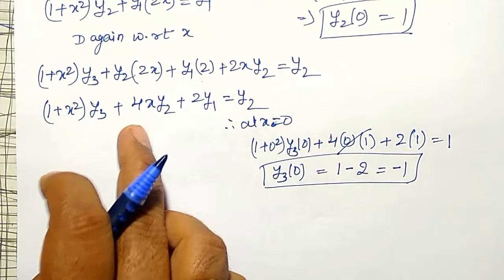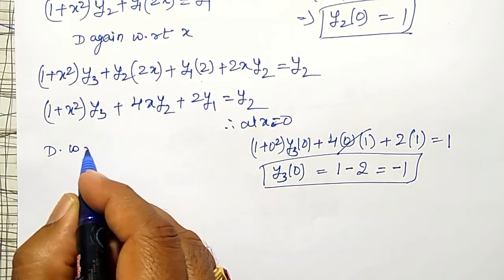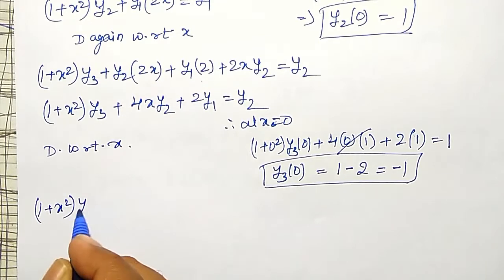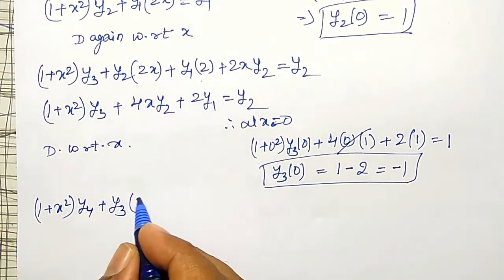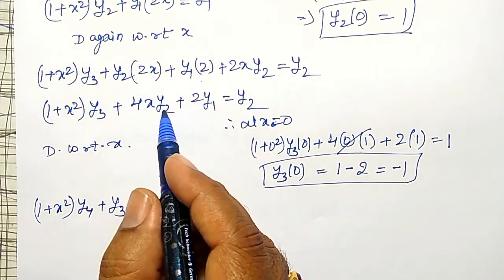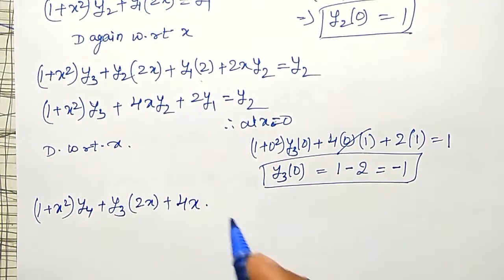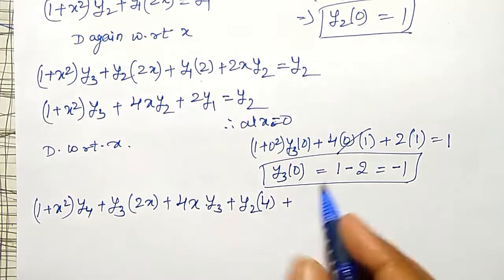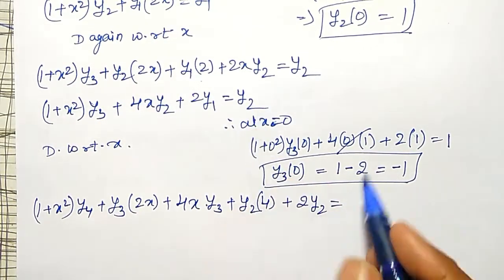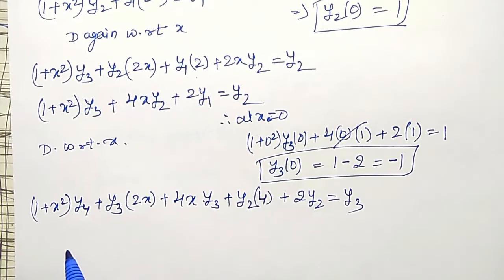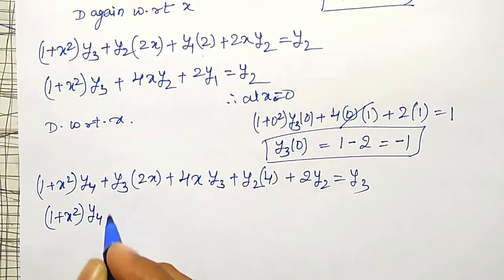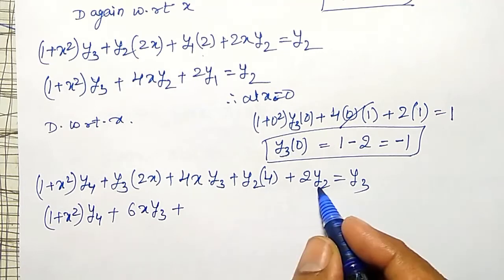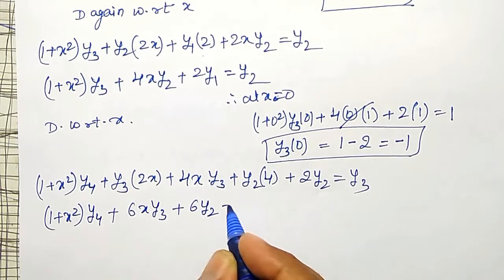To find y4, differentiating again with respect to x and applying the product rule: (1 + x²)·y4 + 2x·y3 + 4x·y3 + y2·4 + 2y2 = y3. Simplifying: (1 + x²)·y4 + 6x·y3 + 6y2 = y3.